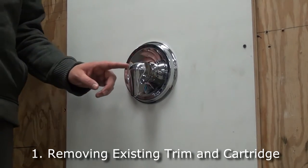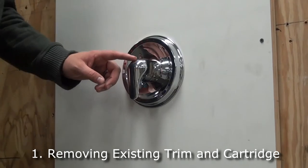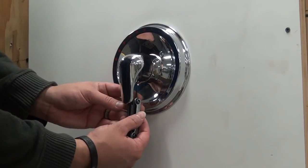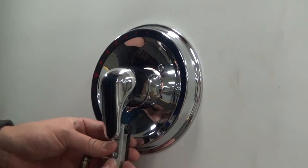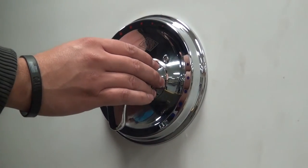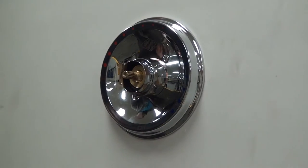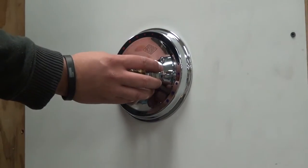The first component that we're going to remove is the handle. You can remove the handle by loosening the set screw located underneath the lever handle. Once the set screw is loosened, you can slide off the handle and also slide off the sleeve.